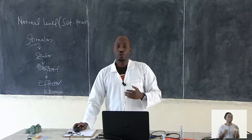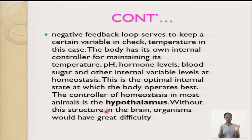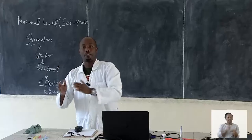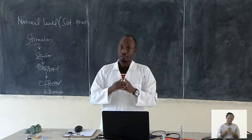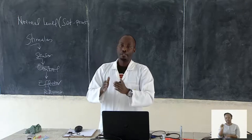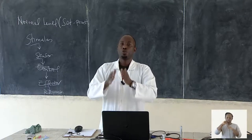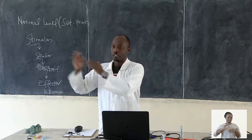The controller of homeostasis in most animals is helped by a part of the brain called the hypothalamus. Without this structure in the brain, organisms would have great difficulties. Absence of the hypothalamus means most of the internal environment would not be balanced. We need the hypothalamus as the part of the brain responsible for controlling the internal environment within our body, regardless of external factors.